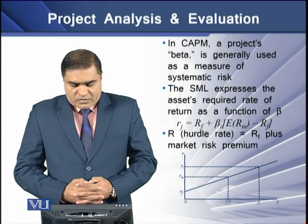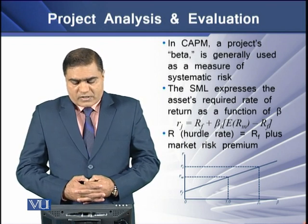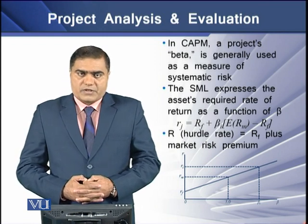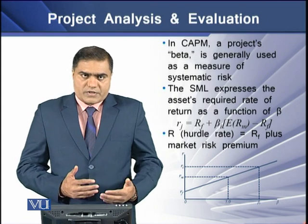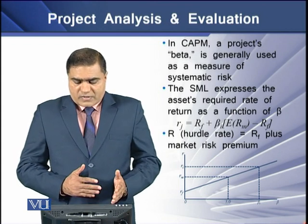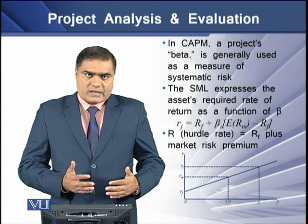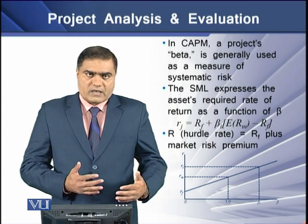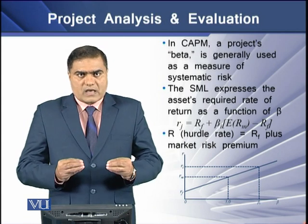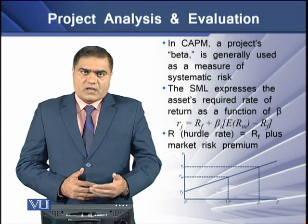This model presents the project's required rate of return as a function of the project's beta. Mathematically, the equation for the SML is: Rj = RF + β × (RM − RF), where RF stands for the risk-free rate of return and RM stands for the market return. The difference between market return and the risk-free rate is the risk premium. When this risk premium is multiplied by the risk factor beta, the resulting term is called the market risk premium — the risk premium that a diversified investor demands for taking on risk.